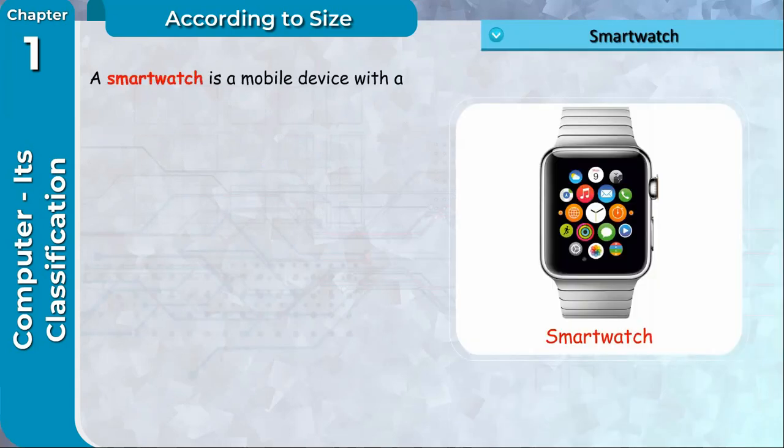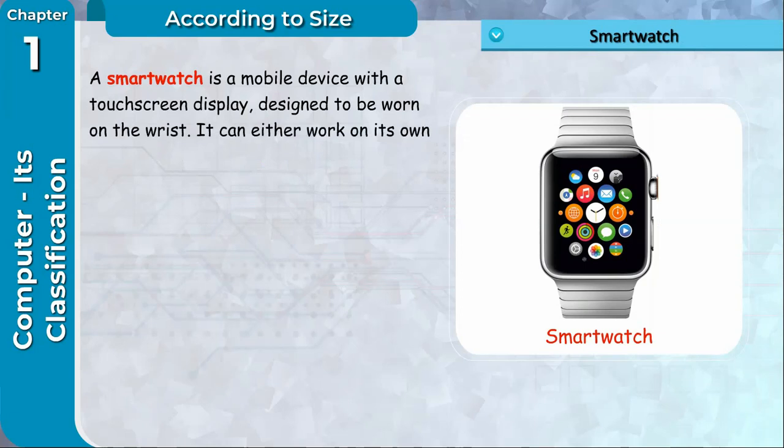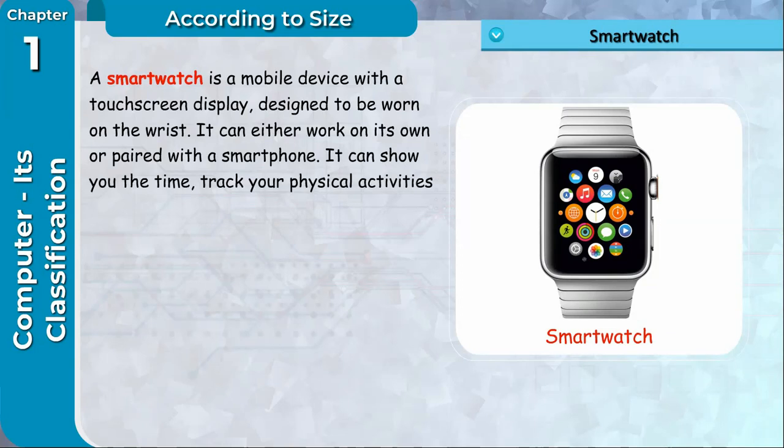Smartwatch: A smartwatch is a mobile device with a touch screen display designed to be worn on the wrist. It can either work on its own or paired with a smartphone. It can show you the time, track your physical activities and show notifications like messages, emails, calls and social networks.